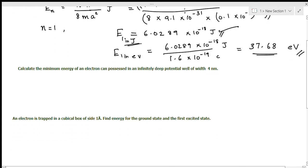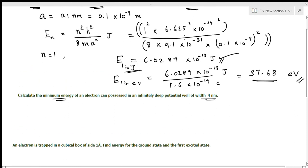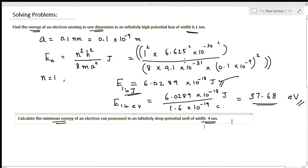The second problem is: calculate the minimum energy of an electron that can be possessed in an infinitely deep potential wall of width 4 nanometer. The difference between the first and second problem is the width value differs.